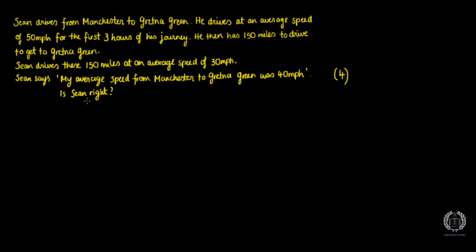Normally with a worded problem question, the best way to go forward is to have a visual diagram because it makes a lot more sense. So I'm going to draw a line from Manchester to Gretna Green. We know he's travelling from Manchester to Gretna Green, and if we look at the first sentence, he drives at an average speed of 50 miles per hour for the first three hours. So the first three hours could be somewhere here — let's just mark a point.